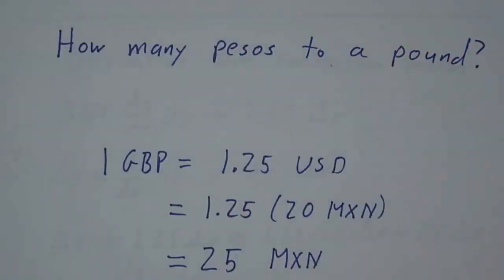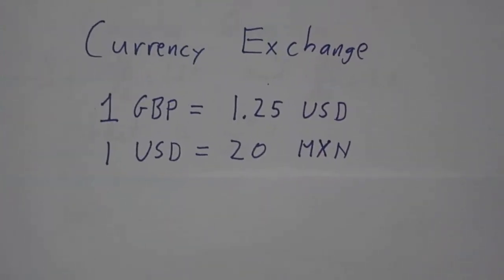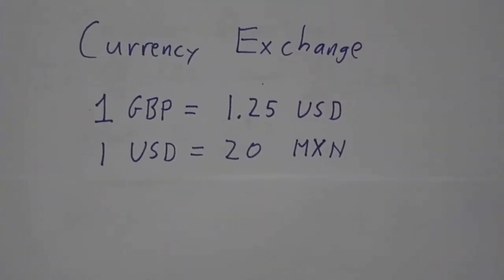The chain rule is about exchanges. So let's think about currency exchange. Right now, a British pound is worth about $1.25, and the US dollar is worth about 20 Mexican pesos. So how many pesos is a pound worth?